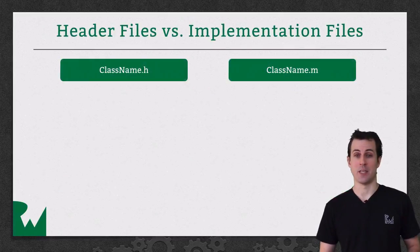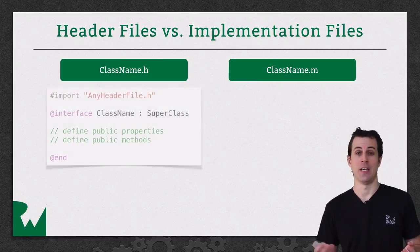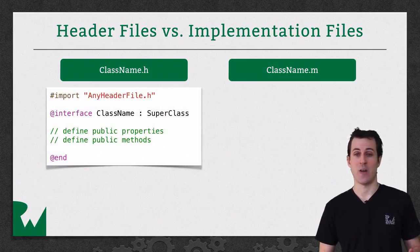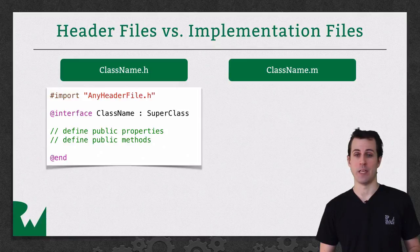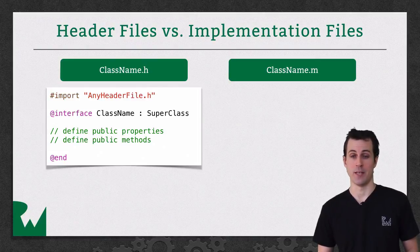In Objective-C, when you create a class, it's actually created across two different files. There's a .h file and a .m file. The difference is the .h file, you can think of that as the public interface to the class. This is where you publish the methods and the properties that you want other classes to be able to know about and call about your class.